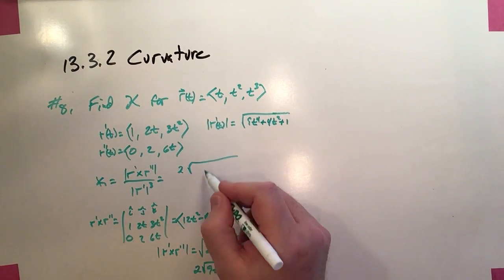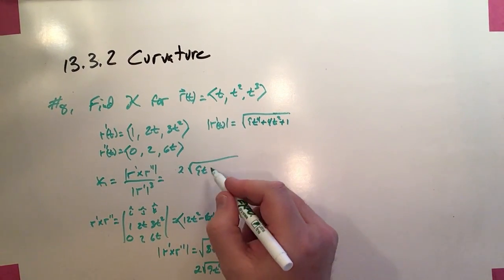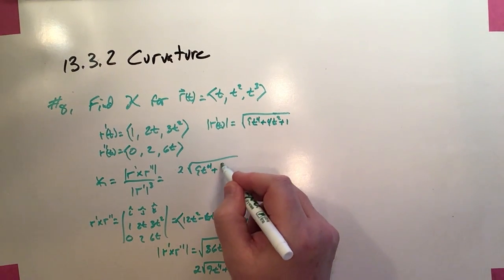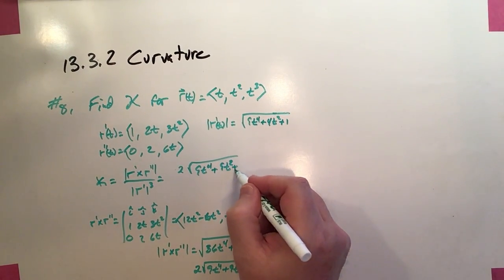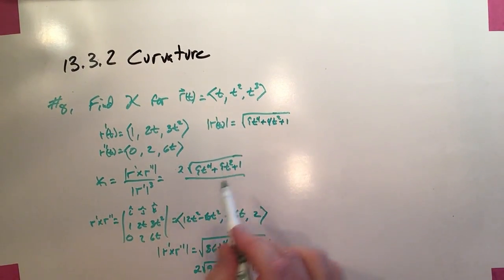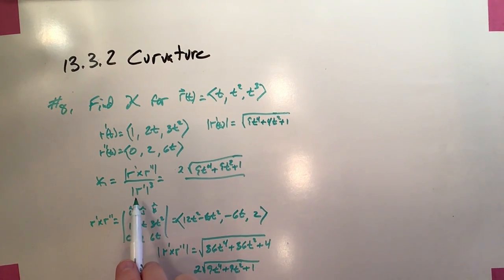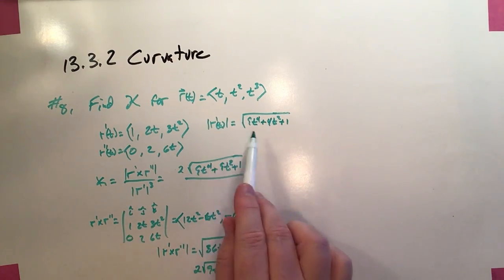And that will go in the numerator up here. So 2 square root of 9t to the fourth plus 9t squared plus 1.